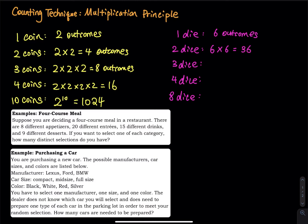For three dice, you have six raised to the third power — six times six times six equals 216. And if you have four dice, the first die has six faces, the second six, the third six, and the fourth six. So you take 216 times six, which equals 1296.